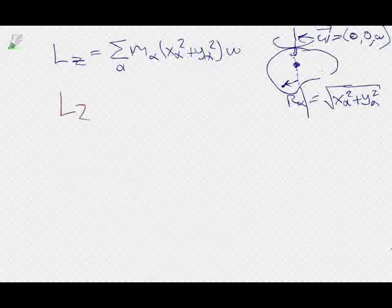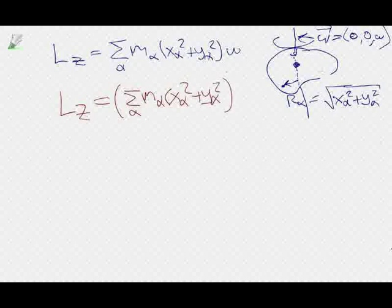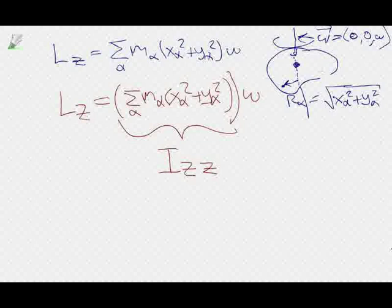I could have written this as L_z equals the sum over alpha of m_alpha times (x_alpha squared plus y_alpha squared) times omega, and this thing in the outer parentheses is what we call I_zz. That's what you used to just call the moment of inertia — now we are calling it the I_zz product of inertia. So now let's go to a continuous object.